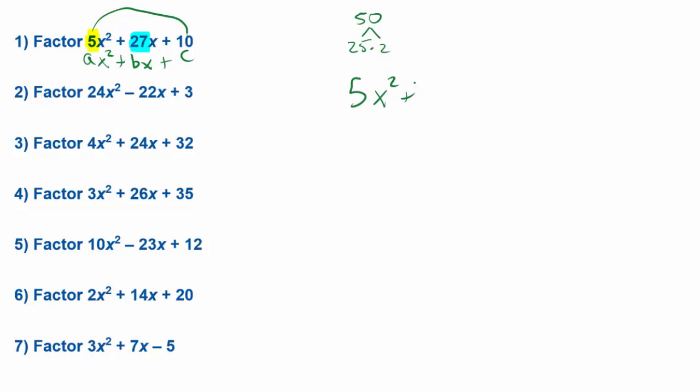We have our 5x squared plus 27x plus 10. And now what we're going to do is we're going to take this middle term and I'm going to rewrite it as the sum of 25x and 2x. I've got my 5x squared. I'm going to rewrite 27x as 25x plus 2x plus 10. Notice that all I did, this stayed the same, this stayed the same. The only thing that changed was that I rewrote 27x as a sum of these two numbers.